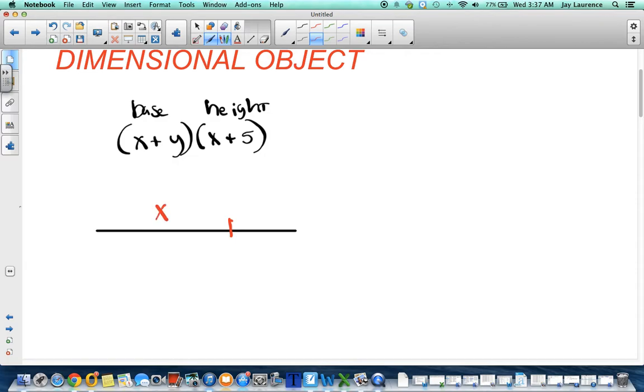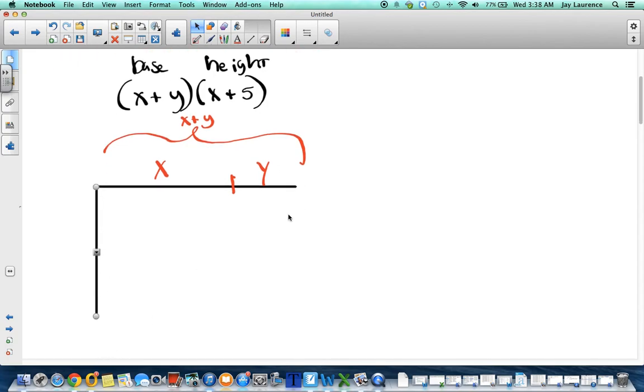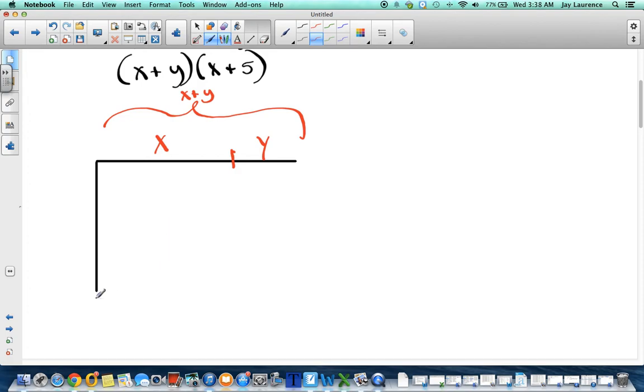And so, I'm going to put a little mark there. This is going to be the x piece of it. That's going to be the y piece of it. Together, the length is x plus y units long. This piece plus that piece. Now, I need to draw the other side, the height. And it's going to be an x plus 5. So, I'm going to need a piece that's x units long. Oops, wrong one. Sorry. There we go. That's what I wanted to do. And I'm going to put a little mark there. Why am I doing that? Because if it's x by x, it's going to be a square. And then I'm going to extend it 5 units.